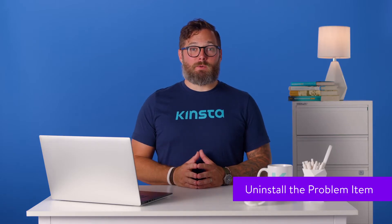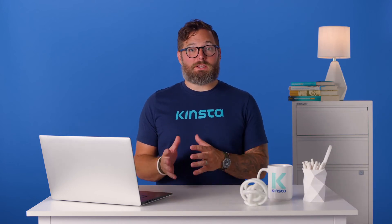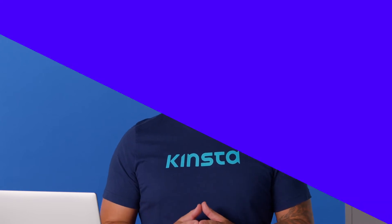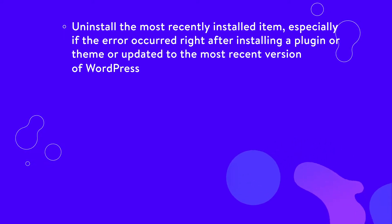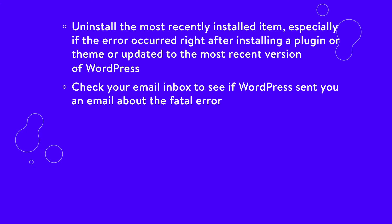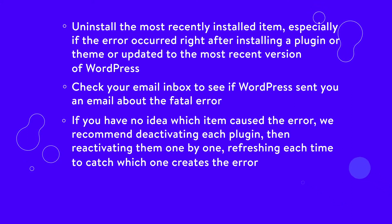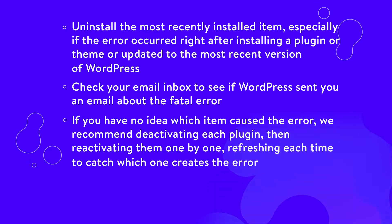Uninstalling a plugin or theme is often the fastest method. This solution removes the max execution error but doesn't increase the max execution time, so it's only suitable if you're willing to find a replacement for the offending plugin or theme. To begin, do your best to identify where the trouble is coming from: uninstall the most recently installed item, especially if the error occurred right after installing a plugin, theme, or updating to the most recent version of WordPress. Check your email inbox to see if WordPress sent you an email about the fatal error — sometimes it includes information about which plugin caused the problem. If you have no idea which item caused the error, deactivate each plugin, then reactivate them one by one, refreshing each time to catch which one creates the error.